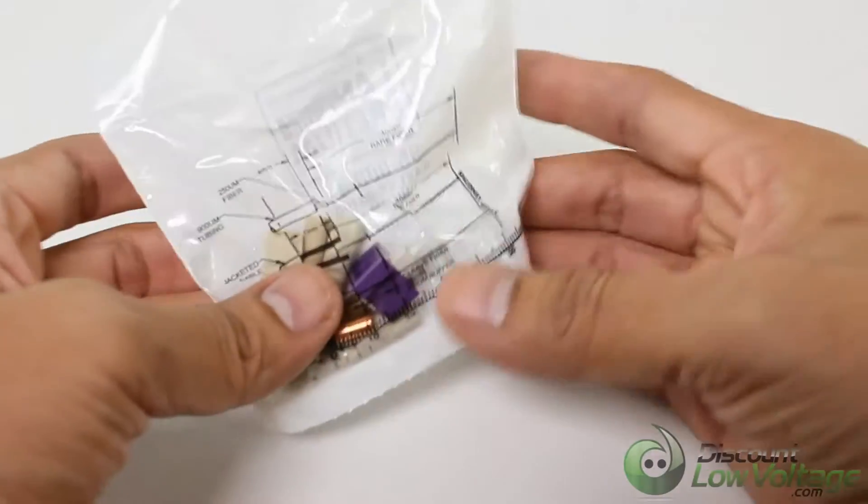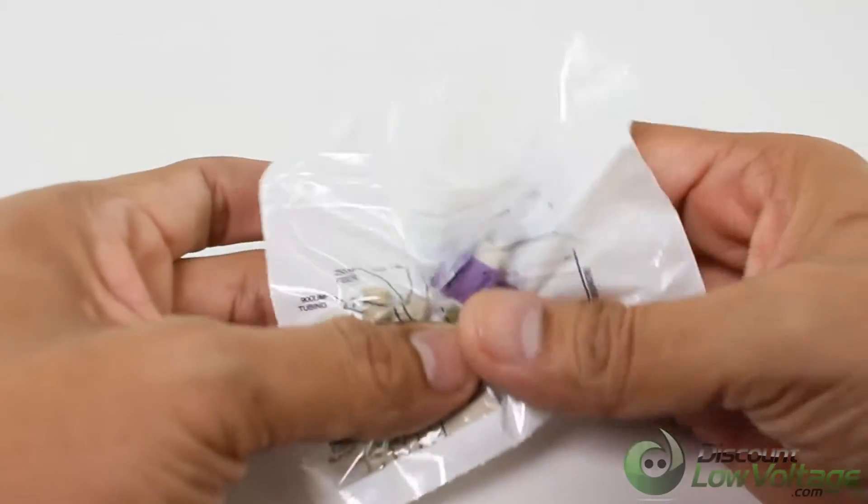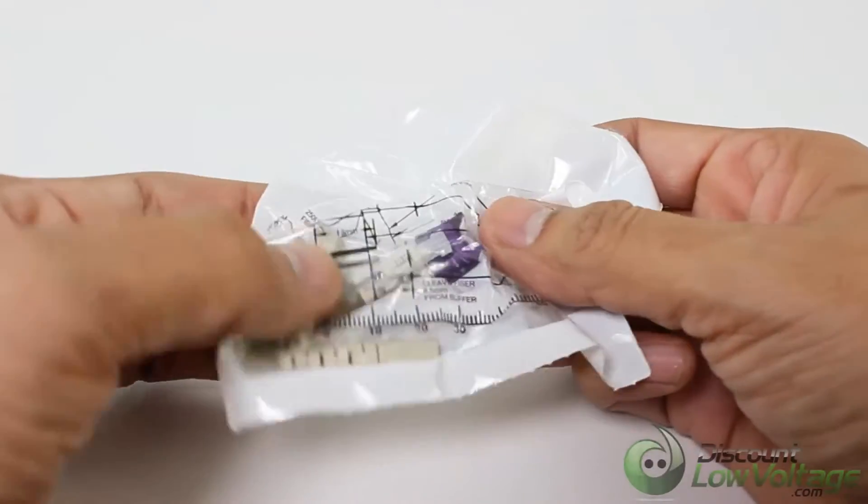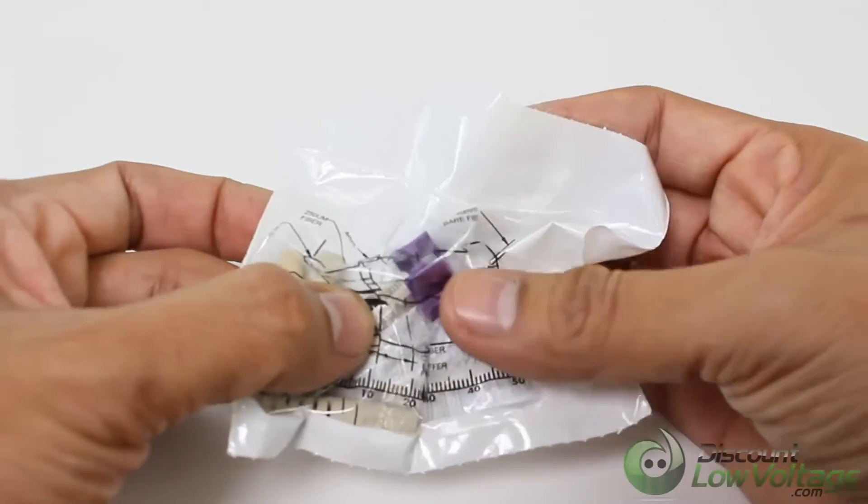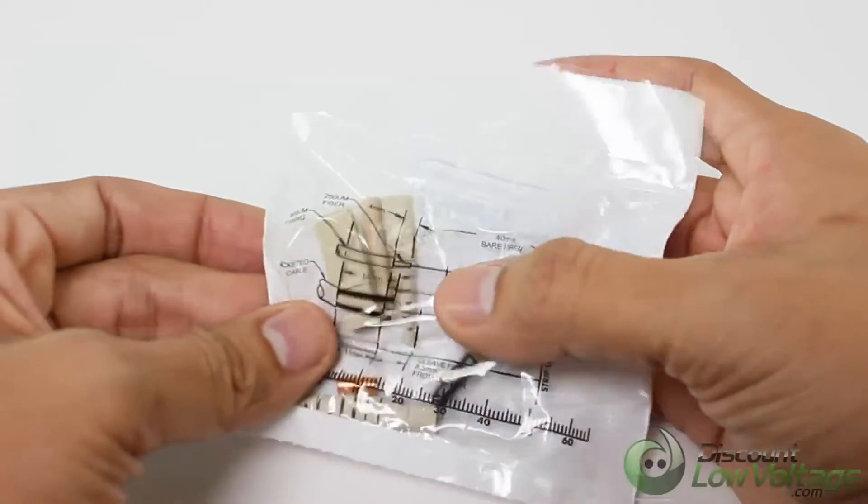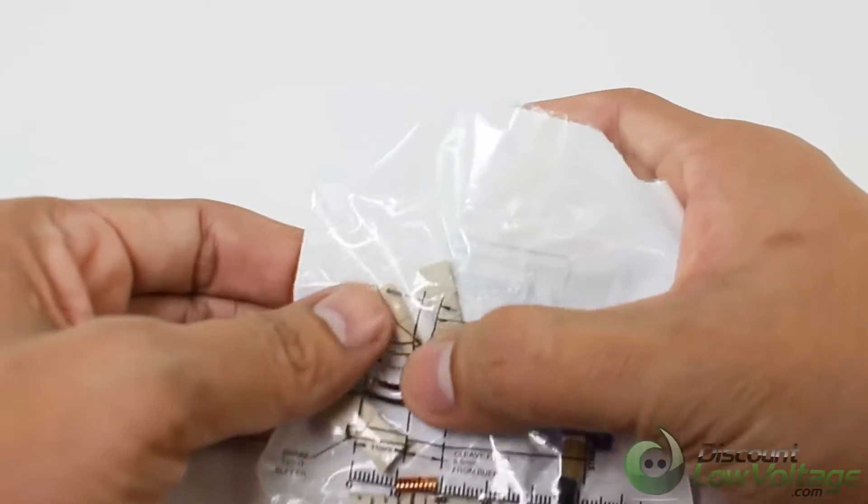Corning Cable Systems Unicam High Performance Connectors offer best-in-class optical performance in a fast, easy field termination solution. Installation of an LC, SC, or ST compatible connectors can be accomplished in about 45 seconds with the Unicam High Performance Toolkit.